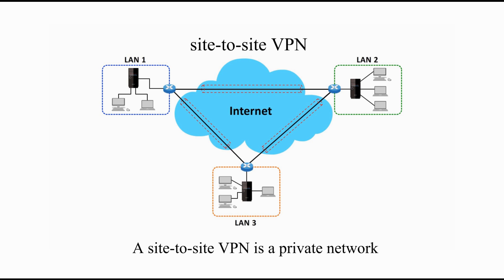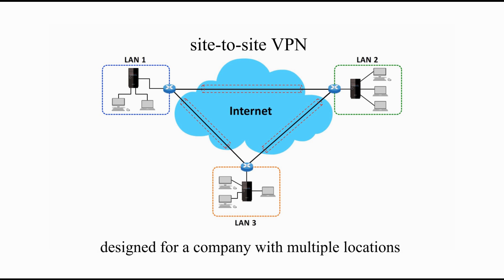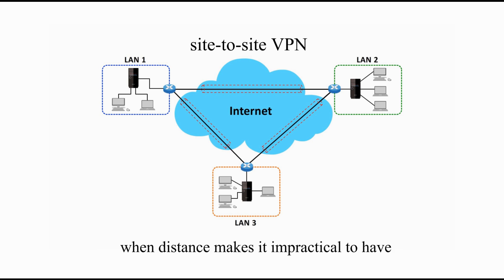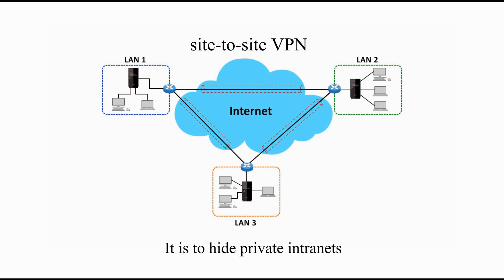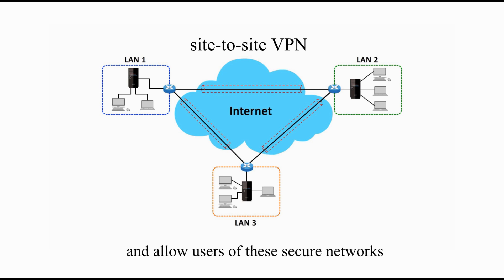A Site-to-Site VPN is a private network designed for a company with multiple locations when distance makes it impractical to have direct network connections between these locations. It hides the private intranets and allows users of these secure networks to access each other's resources.